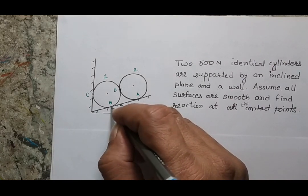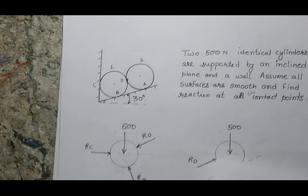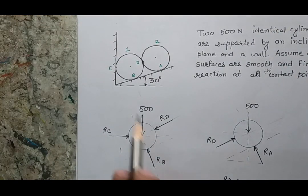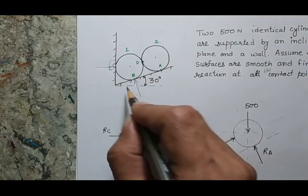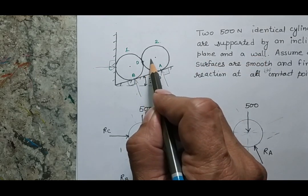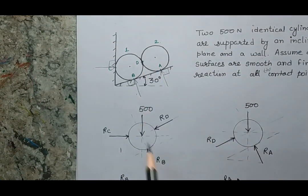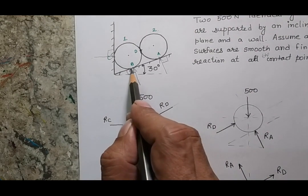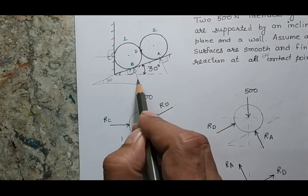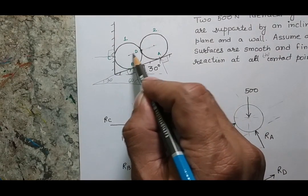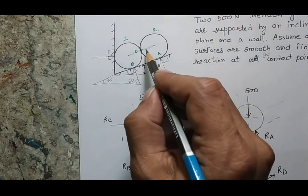When making reactions from an inclined surface, the direction of the reaction is always perpendicular to the inclined surface. For the free body diagram of the first cylinder, there is a reaction perpendicular to the plane, a reaction perpendicular to the inclined plane, a third reaction also perpendicular, and a mutual force between the two cylinders. At point B, completing the triangle shows this is 30 degrees, making the reaction 60 degrees from the horizontal.